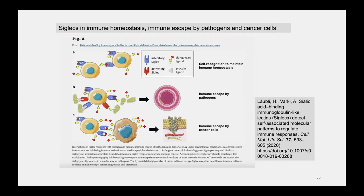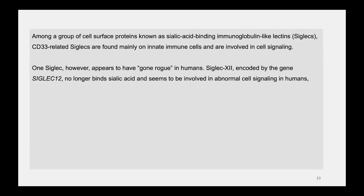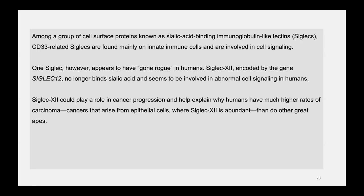Now, a little on Siglecs. This cartoon shows the Siglec interaction with sialic acid on the cell surface, regulating immune homeostasis, immune escape by pathogens and cancer cells. Among cell surface proteins known as sialic acid-binding immunoglobulin-like lectins, or Siglecs, the CD33-related Siglecs are found in innate immune cells and involved in cell signaling. One Siglec, however, appears to have gone rogue in humans: Siglec-12, encoded by the SIGLEC12 gene, no longer binds sialic acid and seems involved in abnormal cell signaling, possibly playing a role in cancer progression and explaining the higher incidence of carcinomas in humans versus great apes.